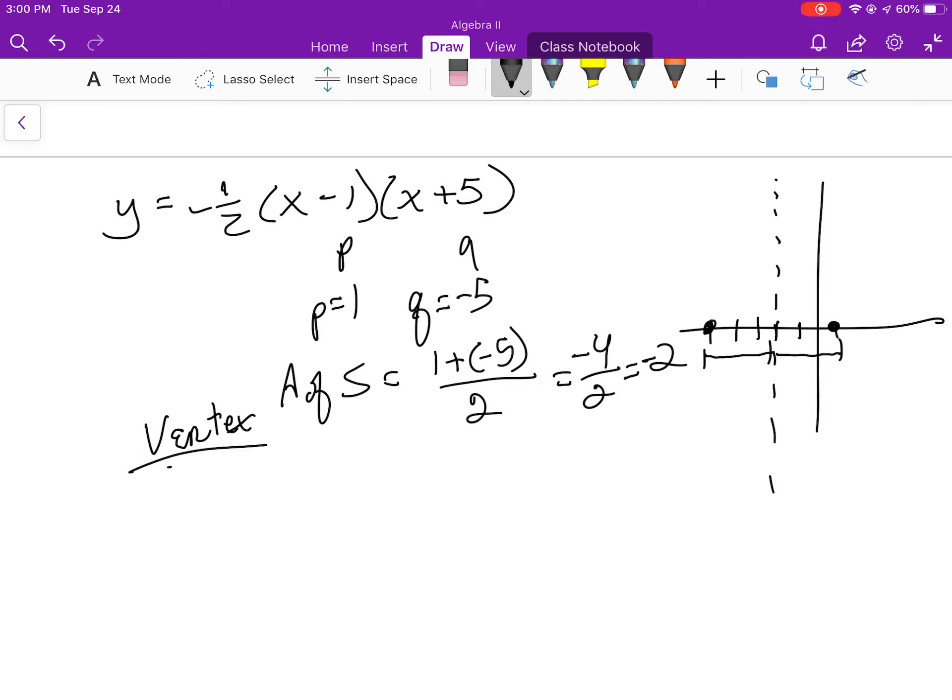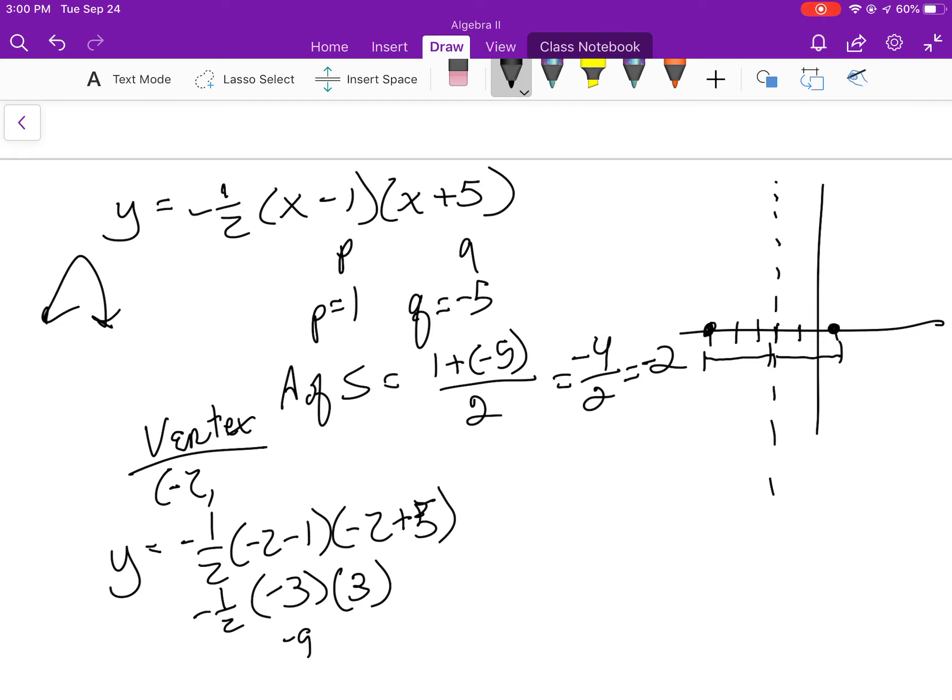Find the vertex, put in a negative 2 for x. So y equals negative 1 half, negative 2 minus 1, negative 2 plus 5, negative 3, 3. Negative 1 half. Now this is negative so I know it's going to open down, so I know my vertex has got to be above the x axis. So I take a negative times a negative. In fact I'll do negative 9 times negative 1 half, that's a positive 4.5.